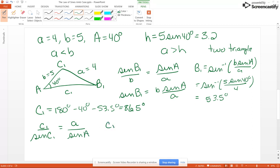You'll get C1 is A sine of C1 over sine of A, so that's going to be 4 sine of 86.5 degrees over sine of 40, which becomes 6.2.